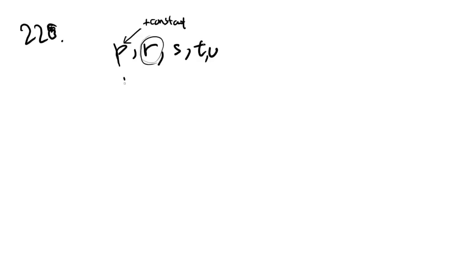So an arithmetic sequence is a sequence where this number equals the previous number plus a constant. For example, 1, 2, 3, 4, 5 would be an arithmetic sequence. Because 2 is 1 plus 1. 3 is 2 plus 1. 4 is 3 plus 1.